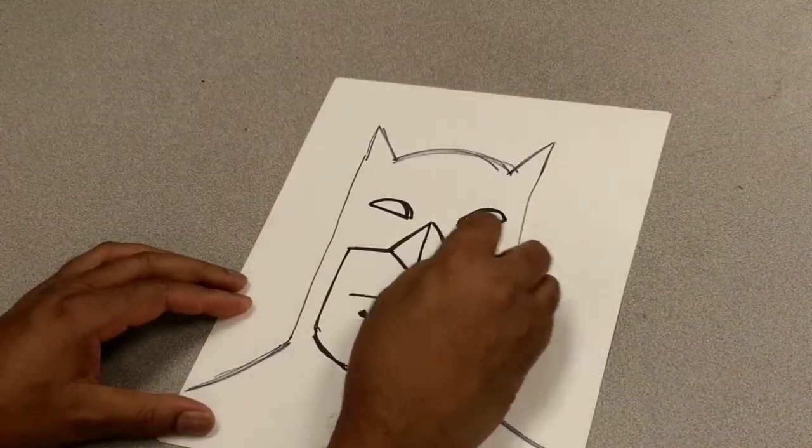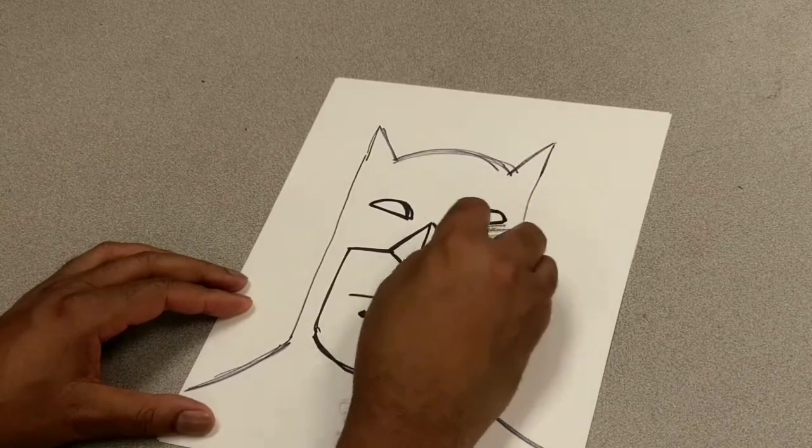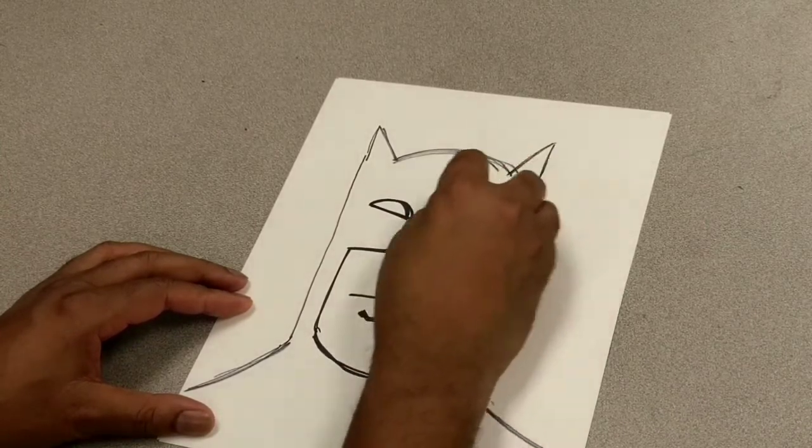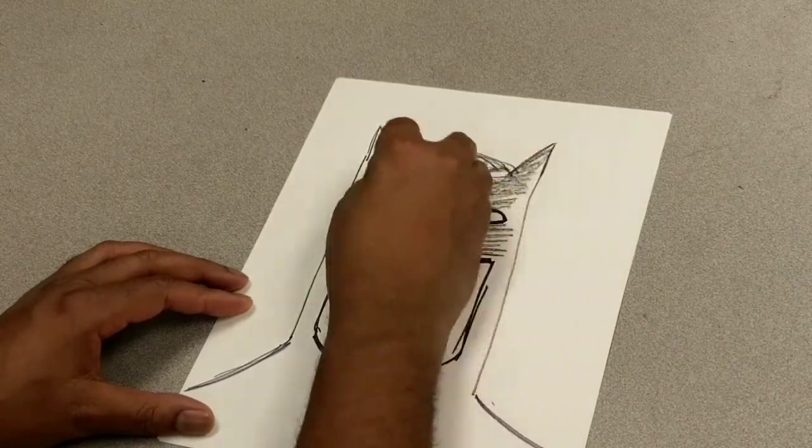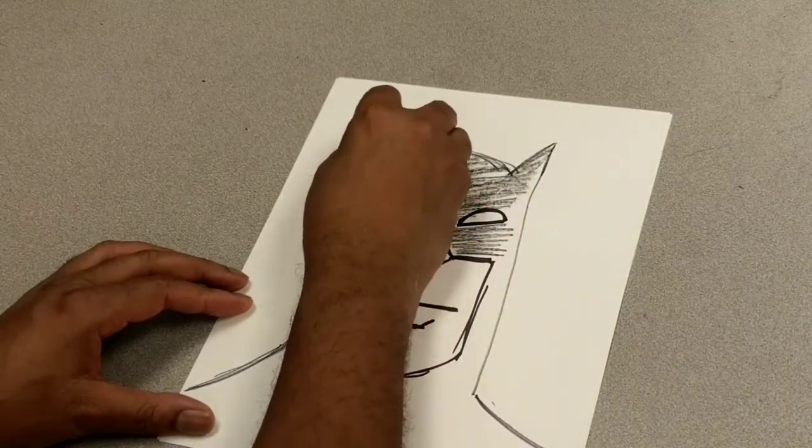I'm going to do it like this. Just lightly color in his mask with the crayon. You can use colored pencils or markers. I'm just using the crayon so you can see it better.